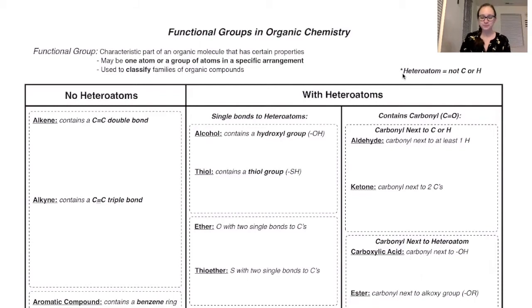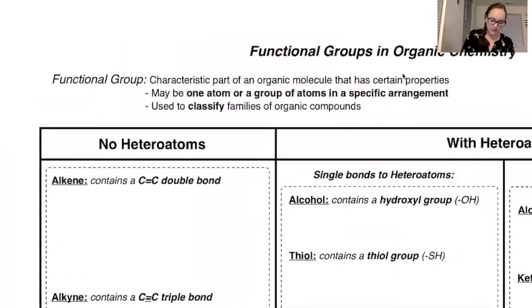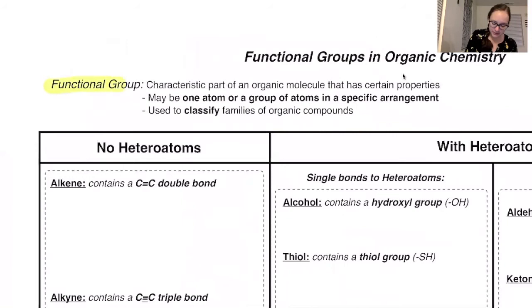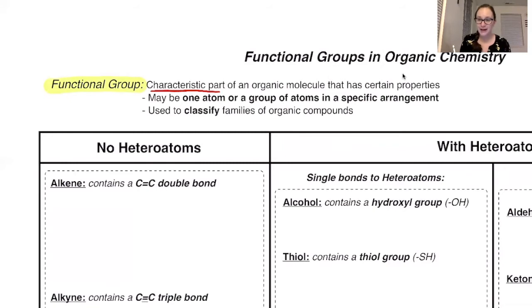So let's look into what is a functional group. A functional group is a characteristic part of an organic molecule that has specific properties. This is important as it can help us predict what properties a molecule has or how a molecule will react when given another molecule to interact with.